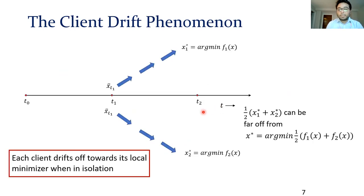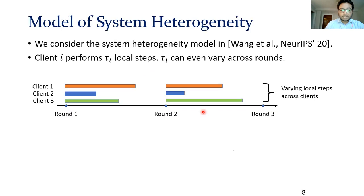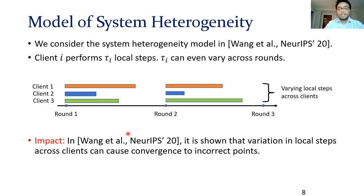Now, as these clients perform more and more local steps, they each drift off towards their own individual minimizer. Because of such client drift, algorithms like FedAvg can end up converging to incorrect points. This situation becomes even more grim when, due to systems heterogeneity, the number of local steps dramatically vary across clients and also across runs. Once again, this can lead to convergence to incorrect points.